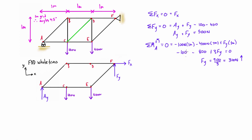Now we can plug that into our earlier expression: Ay plus 300 equals 500, so Ay equals 200 newtons, also in the upward direction.